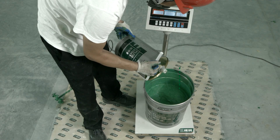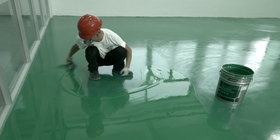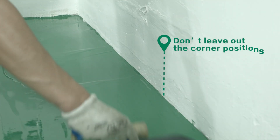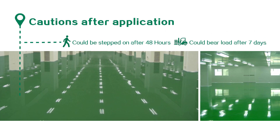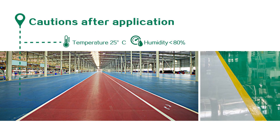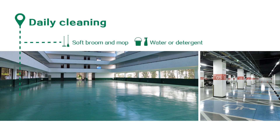Step 4: Troweling epoxy self-leveling top coat. Mix solvent-free epoxy self-leveling color paint with hardener. Use a large trowel to apply. Don't leave out the corner positions. Then use a defoaming roller to defoam. Make sure the coating is consistent. No bubbles and no floating. Please note that the coating could be stepped on after 48 hours, could bear load after 7 days, when dried under standard temperature and humidity. Daily cleaning with a soft broom and a soft mop. Mopping with water or detergent.